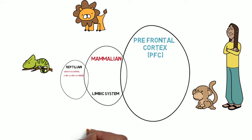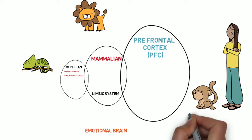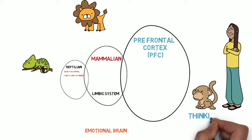When we look at the prefrontal cortex and the mammalian brain, the mammalian brain, which is part of the limbic system, is our emotional brain. And the prefrontal cortex is pretty much our thinking brain.